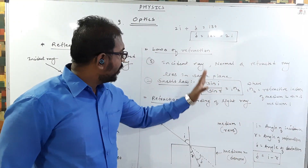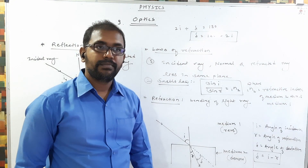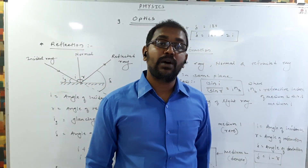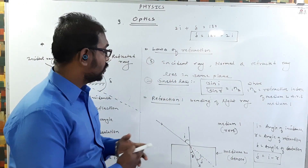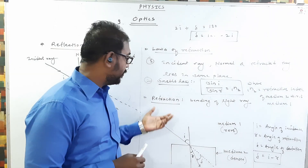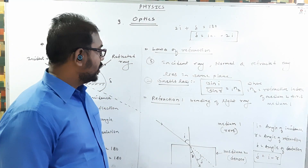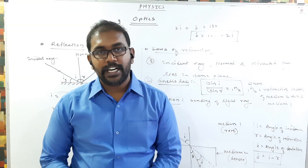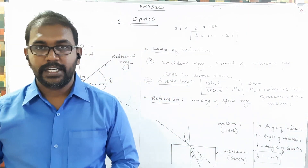I hope everyone understood the laws of refraction. Now we have to cover refractive index in detail. So refraction is the bending of light; we covered the laws of refraction. Let's move to the next article: what is refractive index.